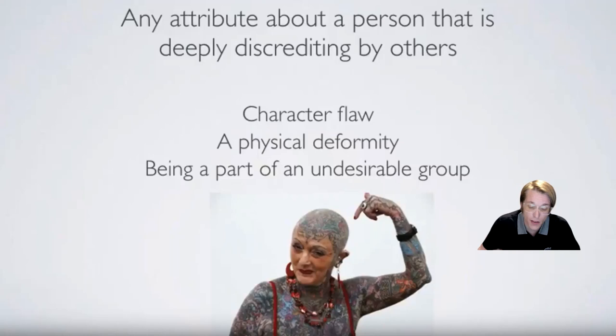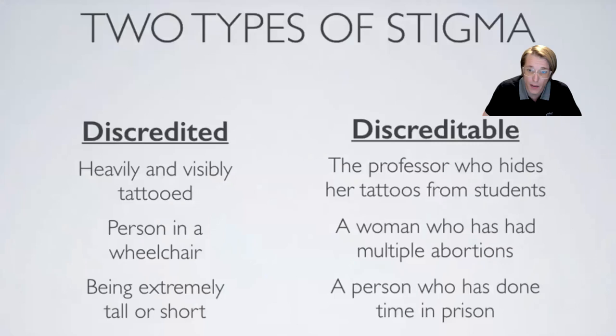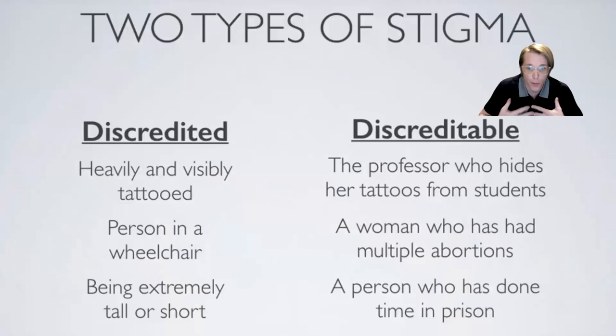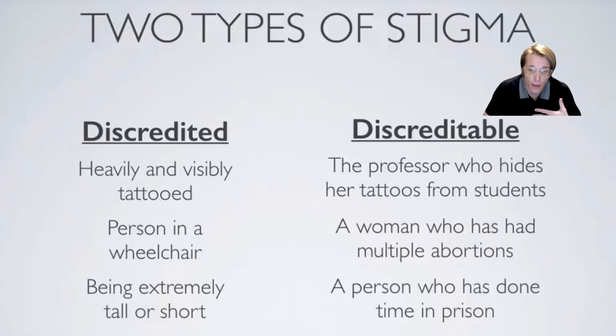Goffman also explains that there are two types of stigma: discredited and discredible. The discredited stigma is one that is not hidden from plain view — people can see it and immediately apply a deviant label. From the documentary, tattooed women walking down the street being stared at is a discredited stigma because the person cannot hide their tattoos. Other examples that are discredited may be a person in a wheelchair or an extremely tall or short person — characteristics that are out in the open to see and label.